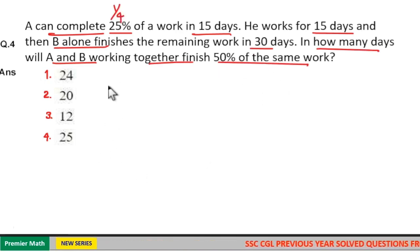Here 25% means 1 by 4th of the work. So 1 by 4th of the work is finished by A in 15 days. Then A can finish the work in 15 into 4, which is 60 days.